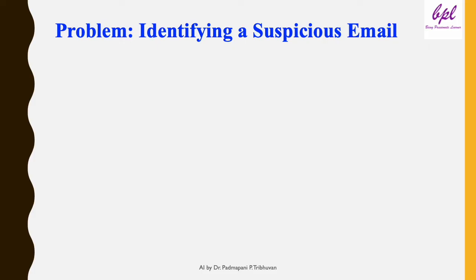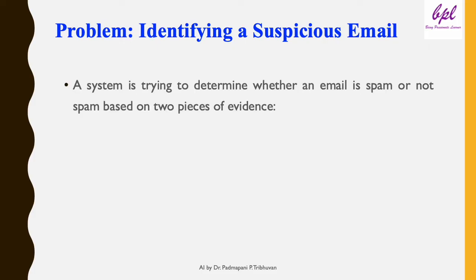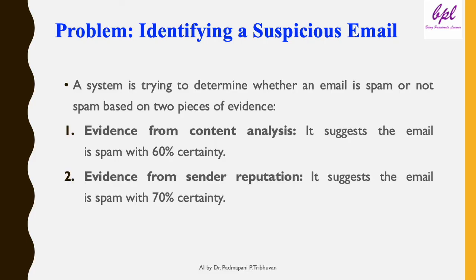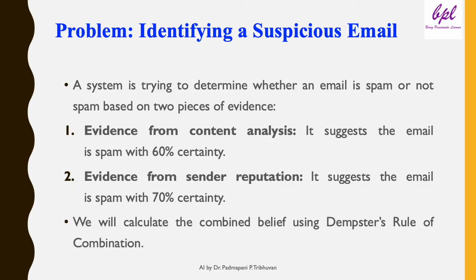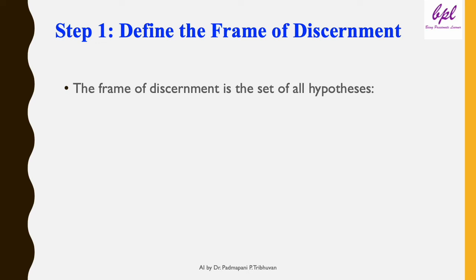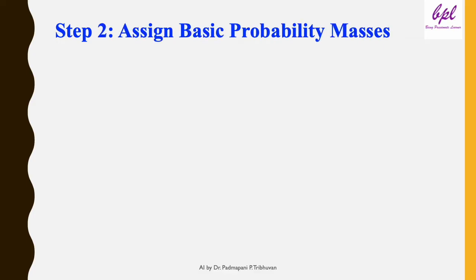Consider the problem of identifying a suspicious email. A system is trying to determine whether an email is spam or not spam based on two pieces of evidence. One is evidence from content analysis which suggests the email is spam with 60% certainty, and the second is evidence from sender reputation which suggests the email is spam with 70% certainty. We will calculate the combined belief using Dempster's rule of combination. Step one: define our frame of discernment, which includes all possible outcomes — the email is either spam or not spam. So Θ = {spam, not spam}. This forms the basis of our reasoning.